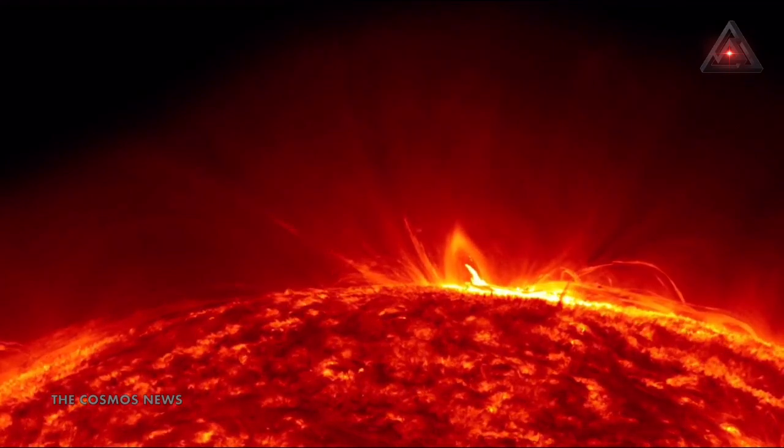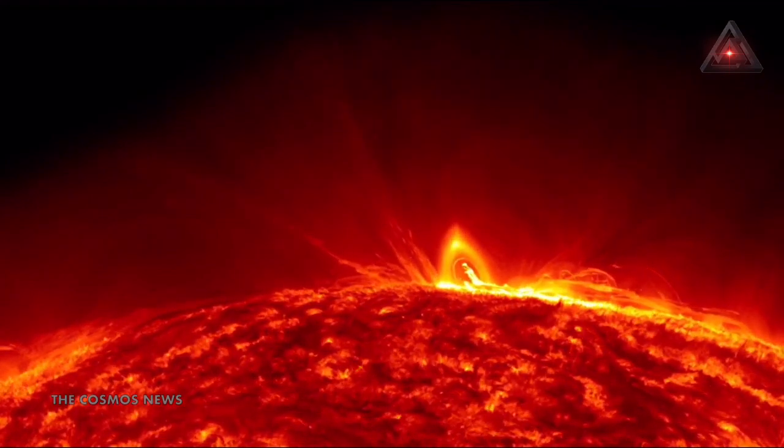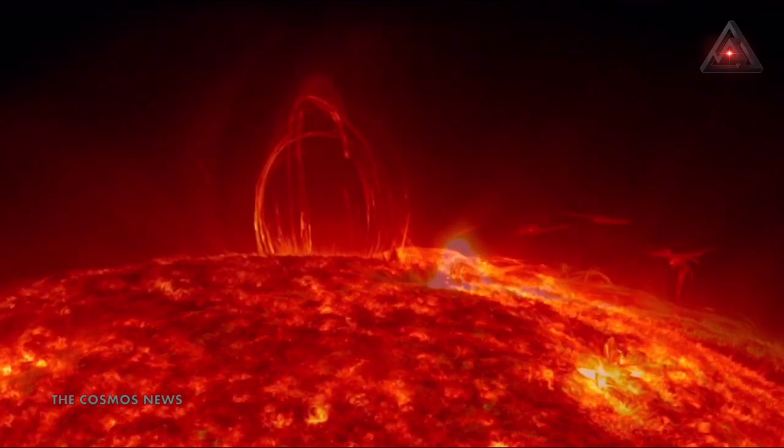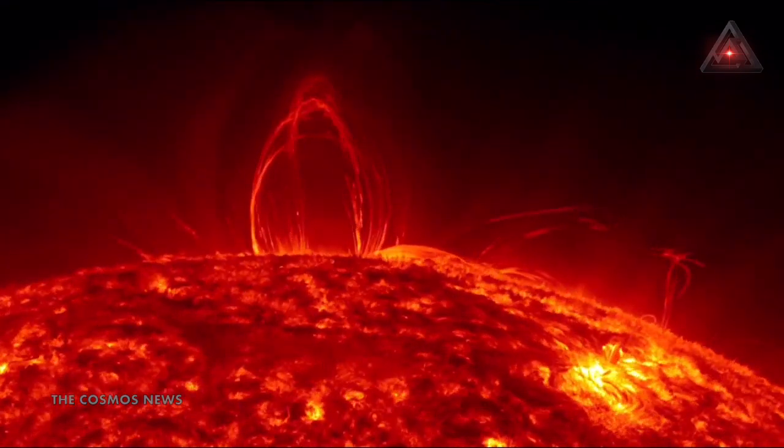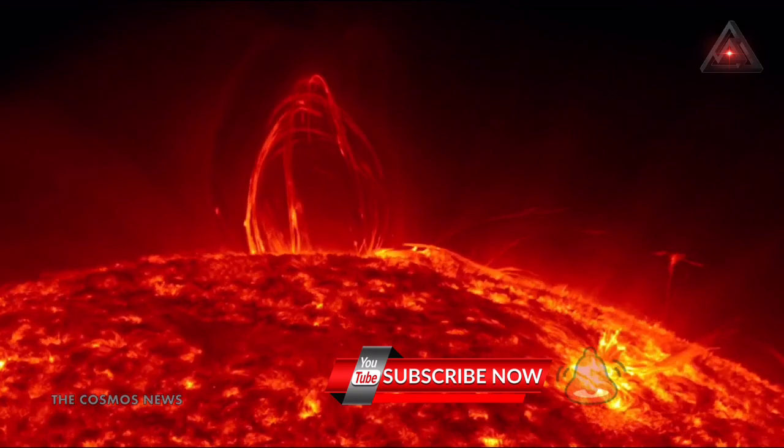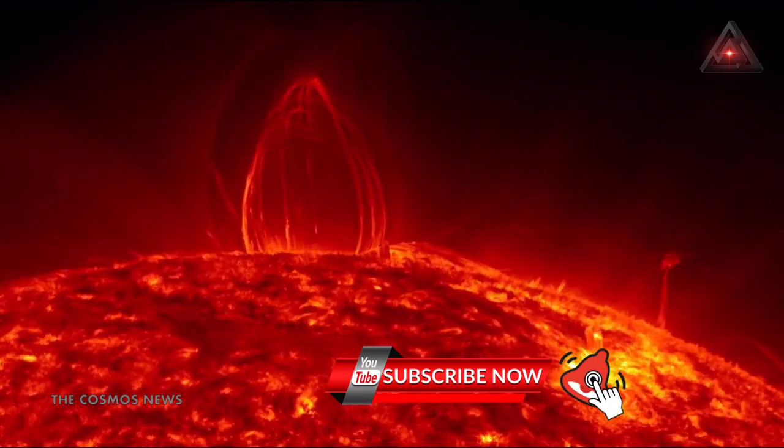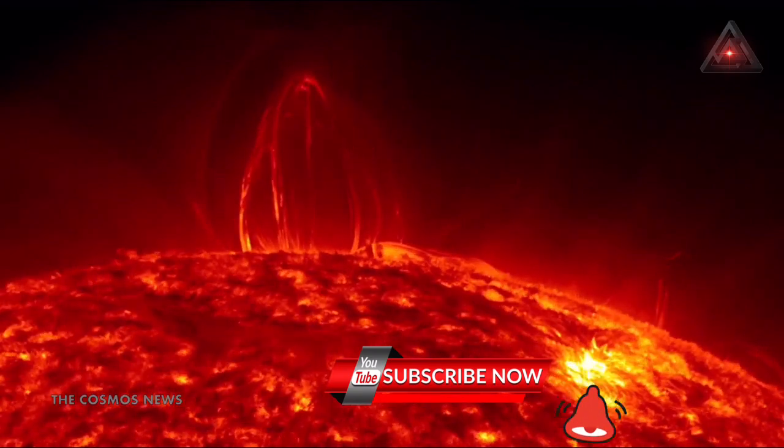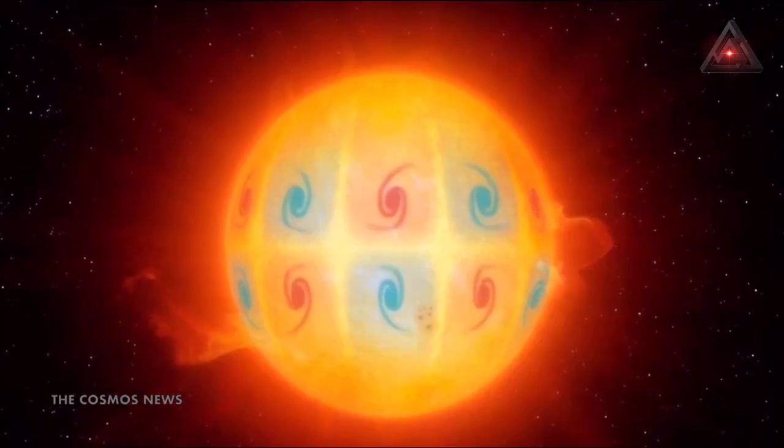Scientists have detected a strange new type of high-frequency wave on the sun's surface, and the waves are moving three times faster than scientists thought was possible. The acoustic waves, called high-frequency retrograde HFR vorticity waves, were spotted rippling backward through the sun's plasma in the opposite direction of its rotation.